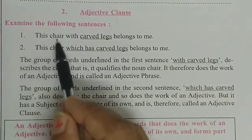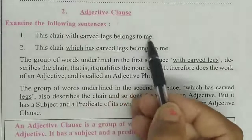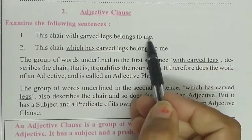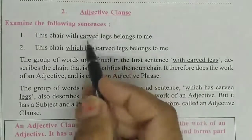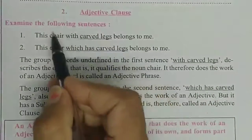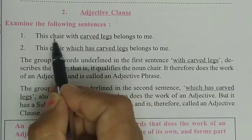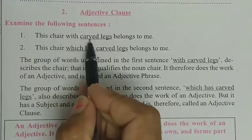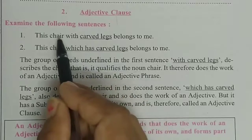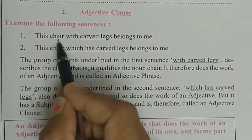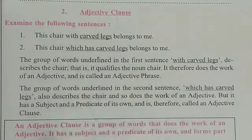Sentence number 1: 'This chair with carved legs belongs to me.' In this sentence, students, these underlined group of words describe the noun chair. This 'carved legs' acts as an adjective for chair. So, this one is called adjective phrase.